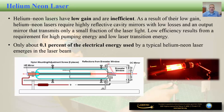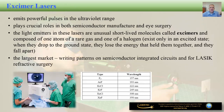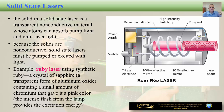We also want to mention excimer lasers. These lasers emit powerful pulses in the ultraviolet range and have found very broad applications in writing patterns on semiconductor integrated circuits as well as laser refractive surgery. The light emitters in these lasers are unusual short-lived molecules called excimers, composed of one atom of a rare gas and one of a halogen, existing only in an excited state. When they drop to the ground state they lose the energy that held them together and fall apart — making this a very specific type of gas laser used in LASIK surgeries and photonic integrated circuit fabrication.